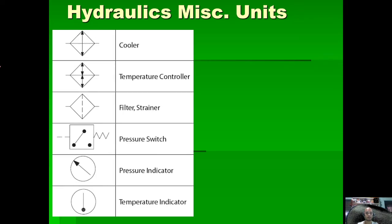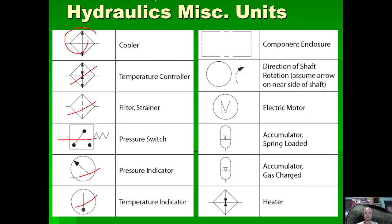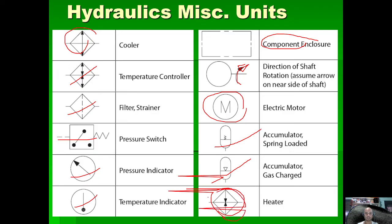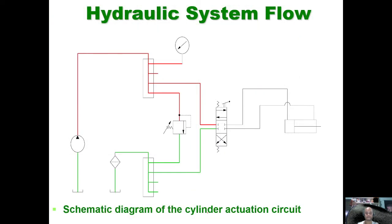Other symbols include: cooler, temperature controller, filter, strainer, pressure switch, pressure indicator, temperature indicator, component enclosure, direction of shaft rotation for one direction, electric motor, spring-loaded accumulator, gas-charged or nitrogen accumulator, and a heater. The cooler symbol has arrows going outward indicating heat leaving, while the heater symbol has arrows going inward indicating heat entering.